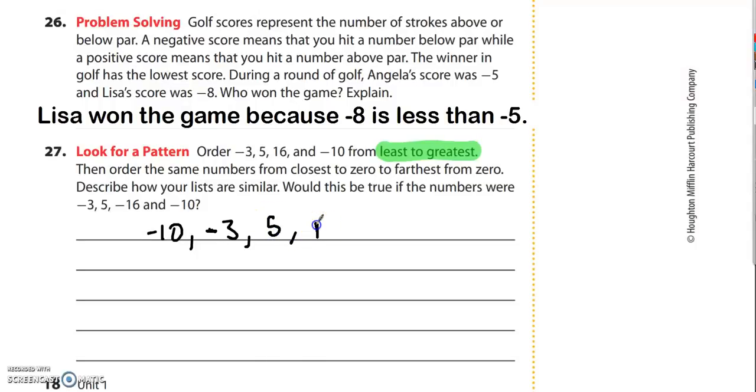So I've done the first sentence. I might even cross it off. That's what I was asked to do there. And then I'm supposed to do a second thing. Maybe I'll put a one right here for my first task, and now I've got a second task. The second sentence reads then order the same numbers from closest to zero to farthest from zero.